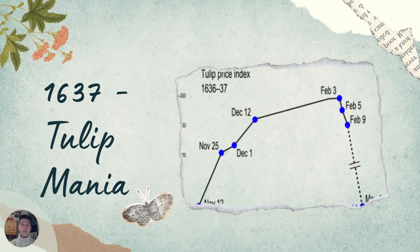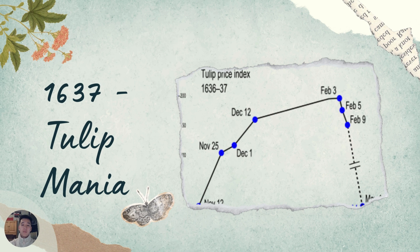On February 3rd of 1637, the Netherlands was in the throes of tulip mania. On this day, the tulip market experienced a spectacular collapse, marking one of the most famous speculative bubbles in history. The collapse had a profound impact on the development of capitalism, exposing the risks of speculative investing and highlighting the importance of rational economic decision making. The aftermath laid the groundwork for the modern understanding of economic bubbles.